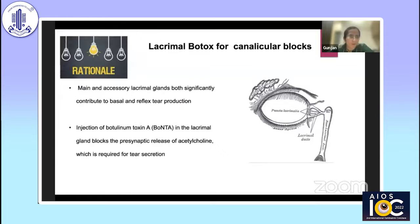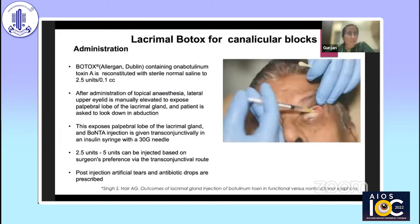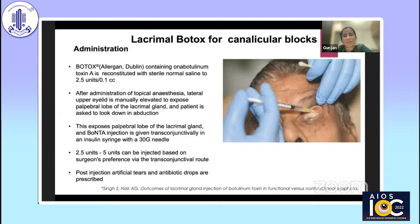If we have a proximal canalicular block, lacrimal botox is one of the best options. Lacrimal botox is given in the main and accessory lacrimal glands, which have significant contribution to basal and reflex tear production. It actually blocks the presynaptic release of acetylcholine, which is required for tear secretion. We give 2.5 units per 0.1 ml of botox directly into the palpebral lobe of the lacrimal gland under visualization. The patient is asked to look in the intranasal direction and the lid is retracted; a Desmos retractor can also be used to expose the palpebral lobe. Post-injection, dry eye can be a problem and artificial tears are usually advised.